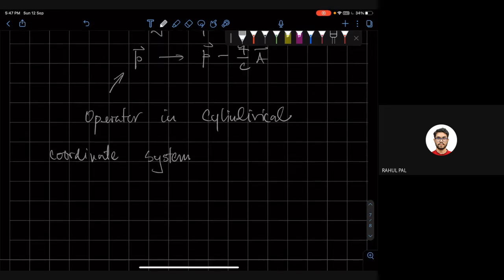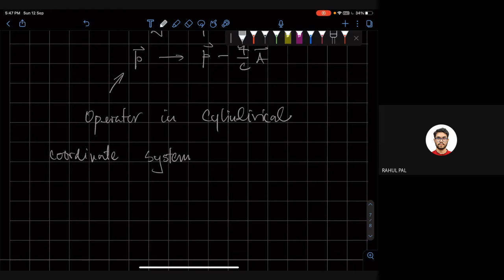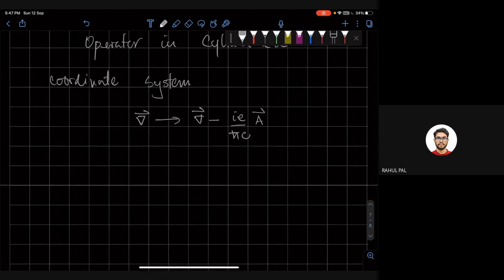In the cylindrical coordinate system, the gradient operator will get replaced by the gradient operator minus iE over ℏc times A. Effectively, what is happening is that the ∂/∂φ operator in the gradient operator...